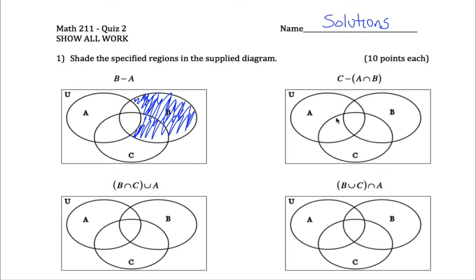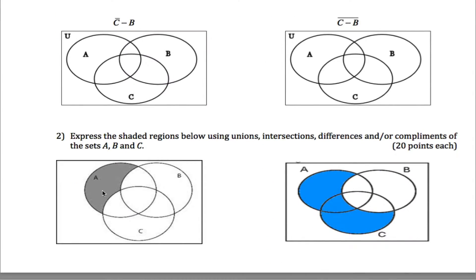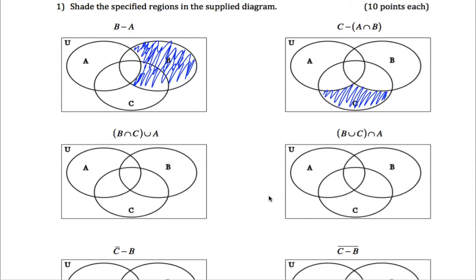So I start out with all of C, but I get rid of this part because it's in A, and then I get rid of this part because it's in B. All that I have left would be this guy, which is kind of the answer to this one.